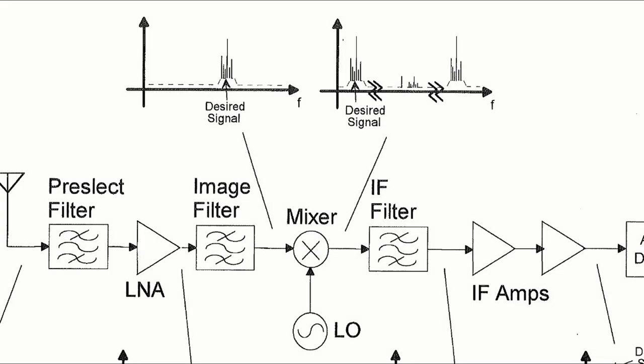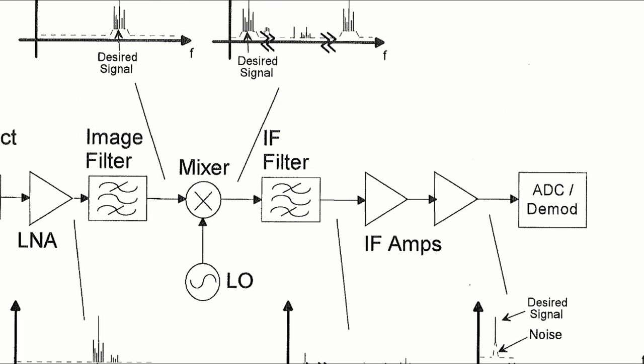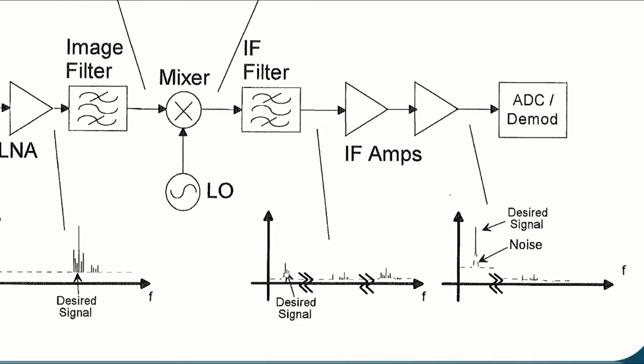And the next thing that happens is we go through an IF filter, which I sometimes call a channel select filter because that's really what its job is. It takes this spectrum at the top here and converts it to this spectrum, where we've eliminated all but one channel in the FM broadcast band. At least that's how it's supposed to work. If there are nearby signals, some of those might come through a little bit and you may also see some of the higher frequency signals coming through.